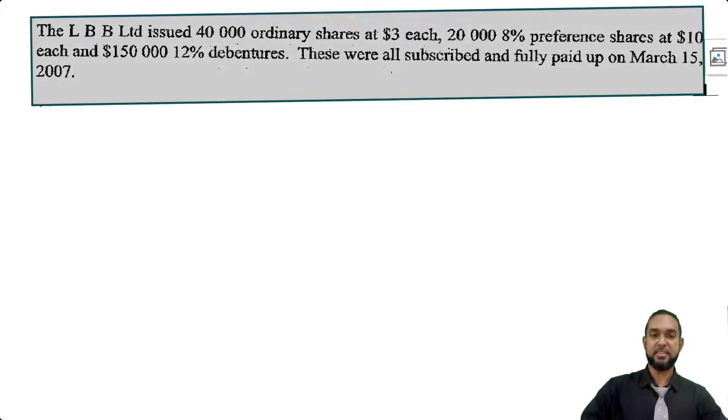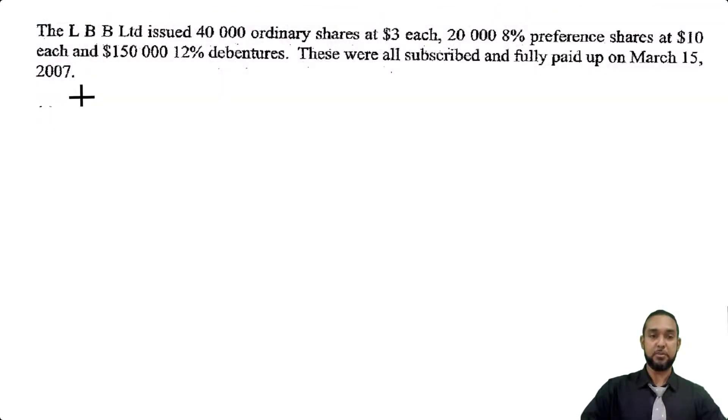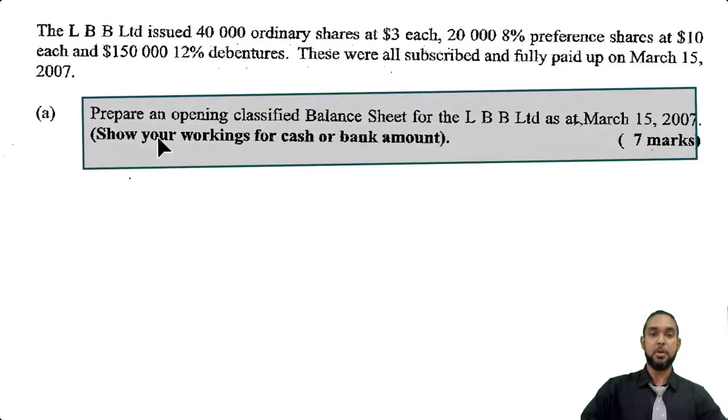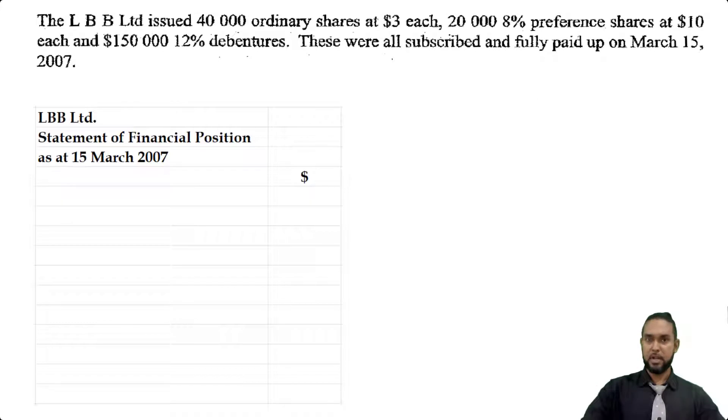It starts off by telling us that LBB Limited issued 40,000 ordinary shares at $3 each, 20,000 8% preference shares at $10 each, and 150,000 12% debentures. These were all subscribed and fully paid up on March 15th, 2007. What do they want us to do first? Prepare an opening classified balance sheet for LBB Limited as at March 15th, 2007. This is going to be a very short balance sheet.